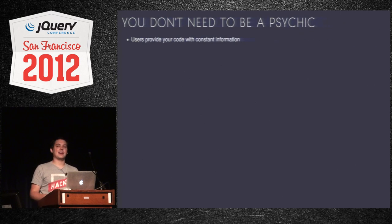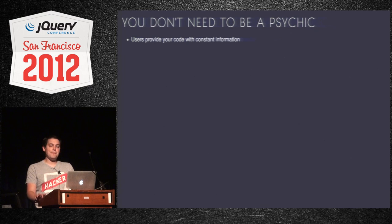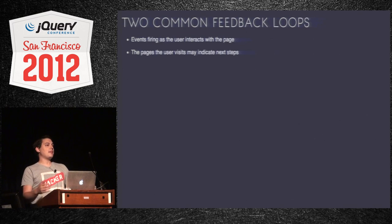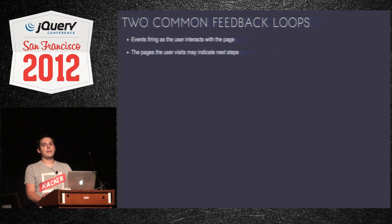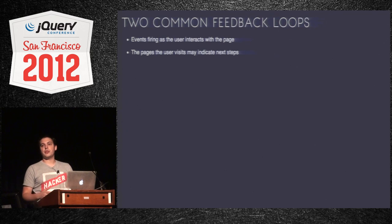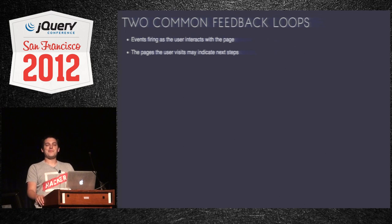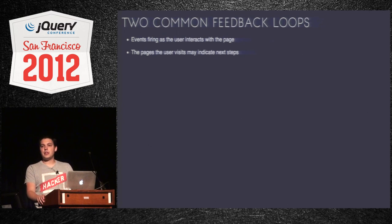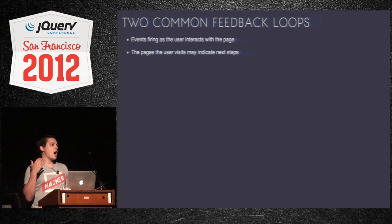Good news is you don't have to be a psychic. Your users are giving you information all the time about what they're doing on your site — not metrics or analytics, just simple stuff you can pick up on. Every time an event fires from user interaction, they're providing feedback to your code about what's happening and maybe even what they're about to do. Even the pages themselves, in a larger context, can indicate what the user is about to do next, and you can start optimizing for that situation.